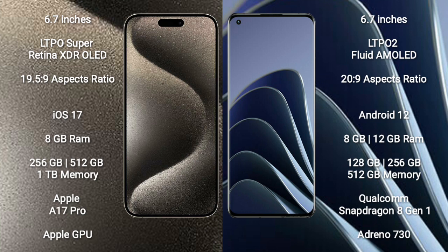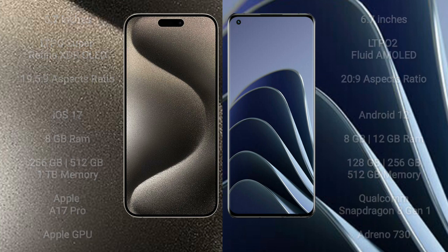OnePlus 10 Pro comes with 8GB, 12GB, or 16GB RAM and 128GB, 256GB, or 512GB internal storage, a Qualcomm Snapdragon 8 Gen 1 processor, and an Adreno 730 GPU.